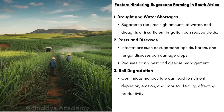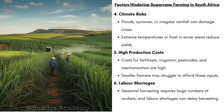Our third factor is soil degradation. Continuous monoculture can lead to nutrient depletion, erosion and poor soil fertility, affecting productivity. Growing sugarcane on the same land year after year drains the soil of all its nutrients, so crop rotation — planting different crops on the same land — is necessary to maintain productivity. Our fourth point is climate risks. Floods, cyclones or irregular rainfall can damage crops — too much water washes away young plants and floods fields. Extreme temperatures or frost can also reduce yields, as sugarcane is very sensitive to cold; frost burns the leaves and stops growth.